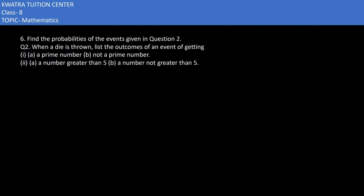Let's start with the sixth one. It says find the probability of the events given in Question 2. Question 2 says: When a die is thrown, list the outcomes of an event of getting a prime number. So we have found out in the second question, now what do we need to find out?